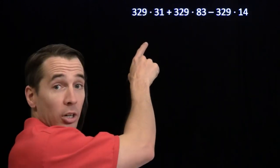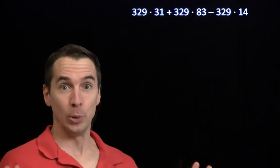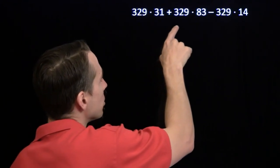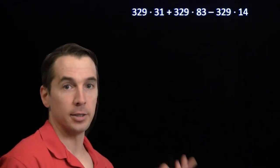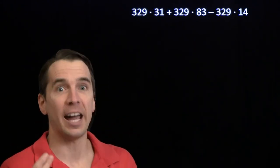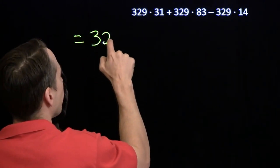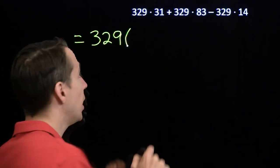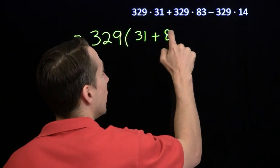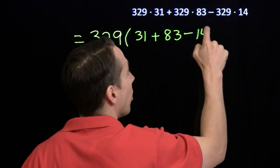Yikes. I mean, you want to start off by multiplying out 329 times 31? Be my guest. I'm way too lazy for that. I want to find something smarter to do here. I see the 329 in each of these three products that I sure don't want to multiply out. So what I'm going to do is I'm going to factor. I'm going to break out the distributive property and factor out the 329. Because I've got 329 times 31 plus 329 times 83 minus the 329 times the 14.